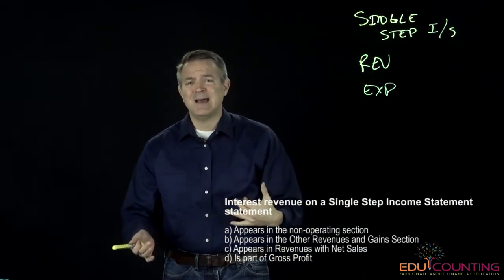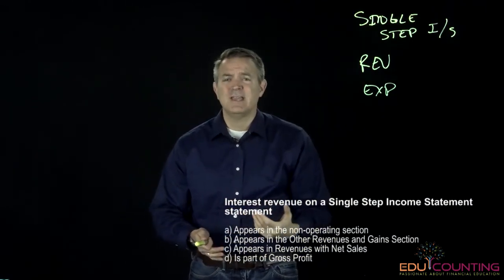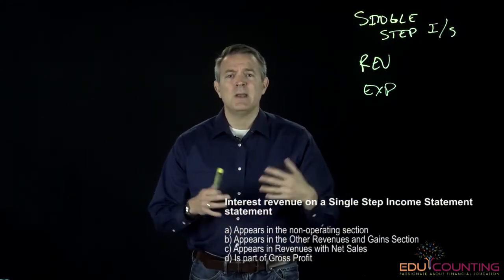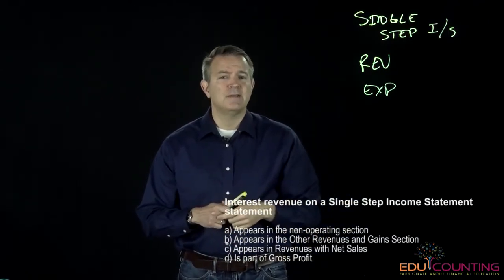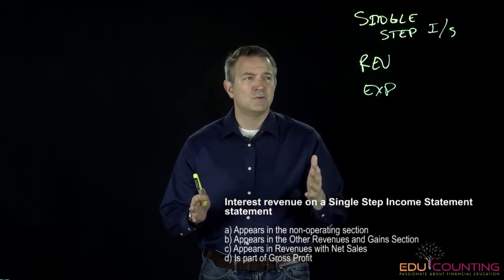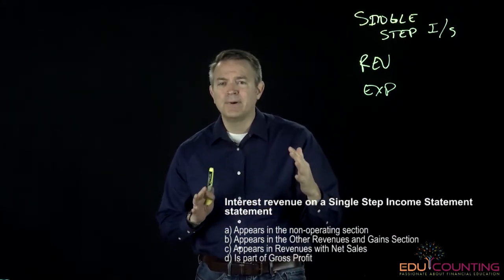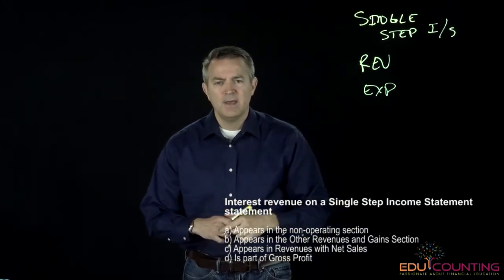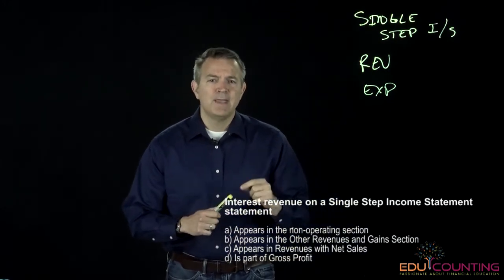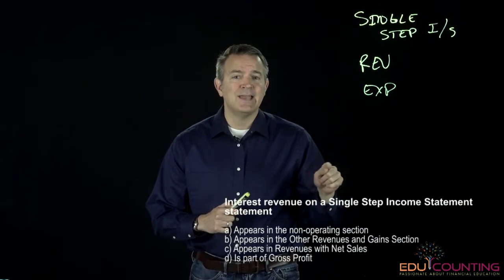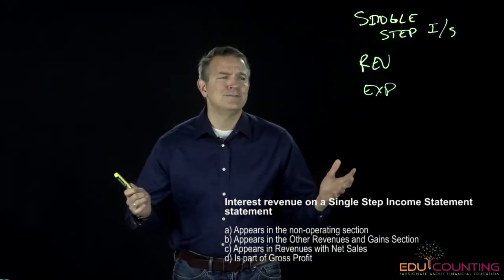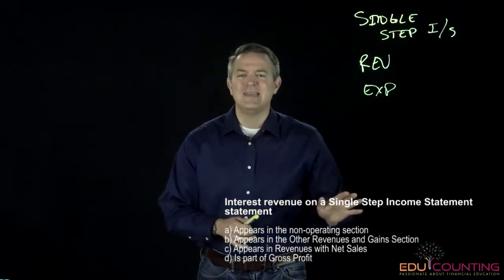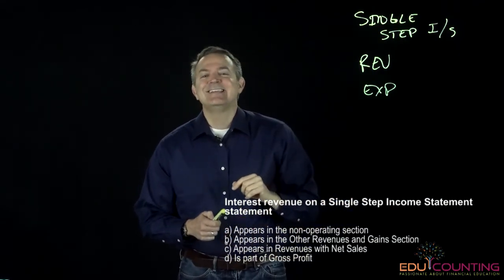So does interest revenue appear in the non-operating section on a single-step income statement? Well, that's not true because there is no operating versus non-operating distinction — it's all thrown together. So A can't be the answer. What about B — does it appear in the other revenue and gain section? There is no other revenue and gain section; there's either revenue or expenses. So B can't be the answer either.